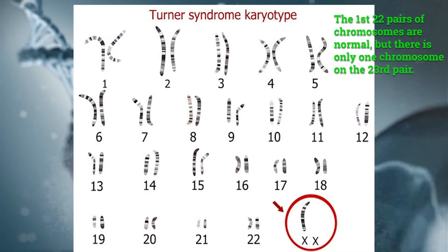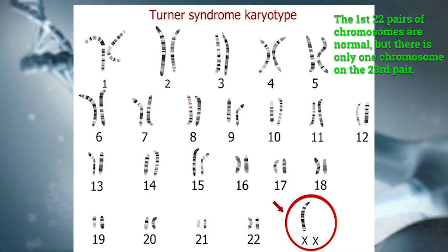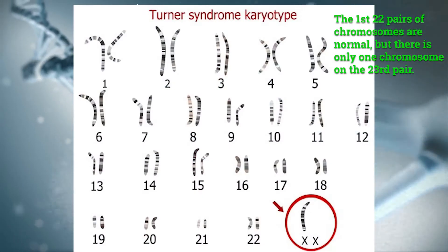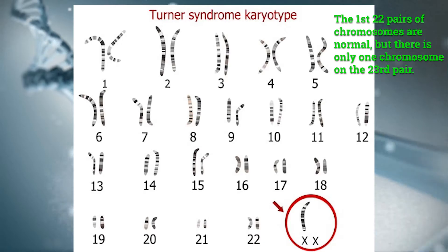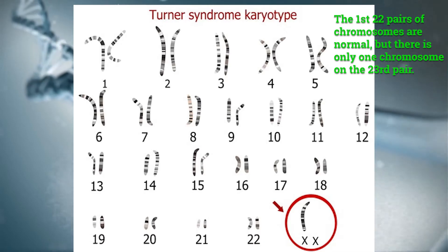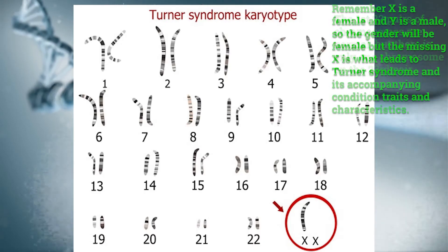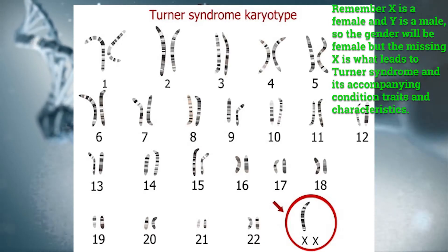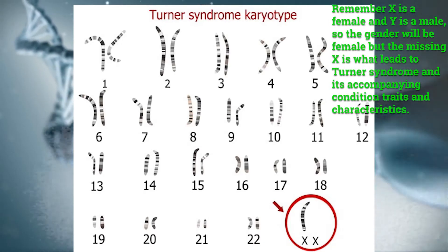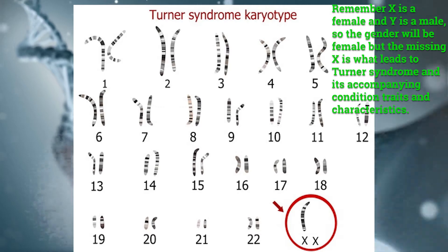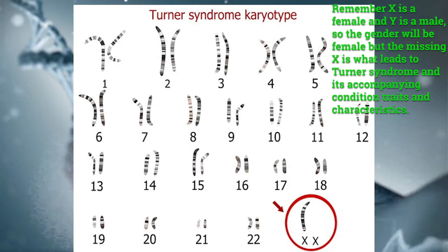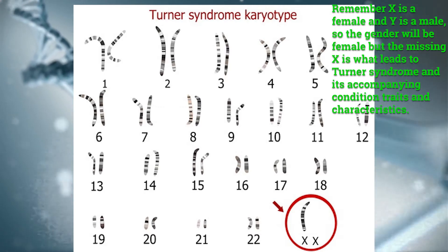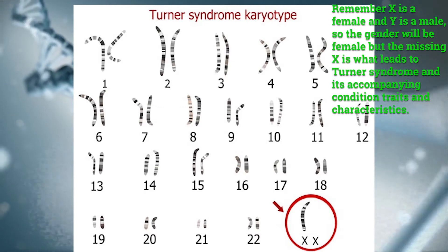Let's take a look at the karyotype for Turner syndrome. Notice how there are 22 pairs of chromosomes for the first 22, but if you look at the 23rd pair, there is only one chromosome. Remember, X is a female and Y is a male, so the gender will be female, but the missing X is what leads to Turner syndrome and its accompanying condition traits and characteristics.